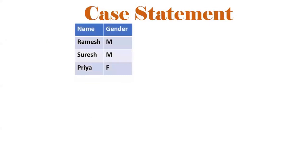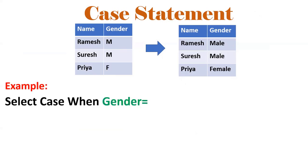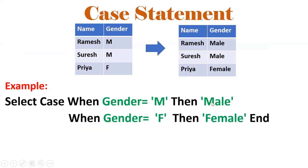Now we'll see one example. In a database table with columns name and gender, what I want to display — name as-is, but in place of M I want to display male, and in place of F I want to display female. So we write: SELECT CASE WHEN gender = 'M' THEN 'male', WHEN gender = 'F' THEN 'female'. In database, when something is there and I want to display something else, we should go for a conditional statement.